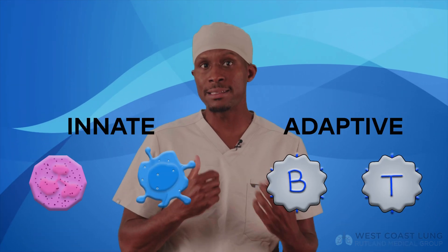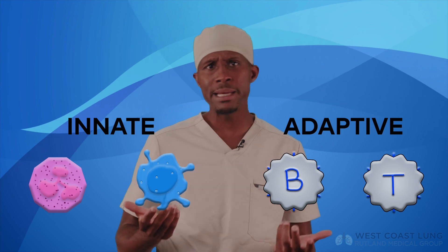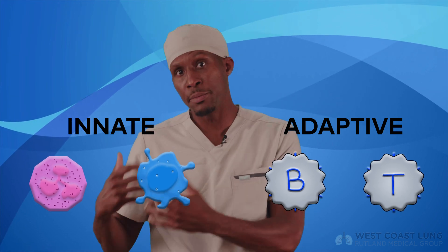Again, when I'm talking immunology, I'm talking cells of the innate and the adaptive immune system. Neutrophils and macrophages are examples of innate cells, while T cells and B cells are examples of adaptive immune cells.